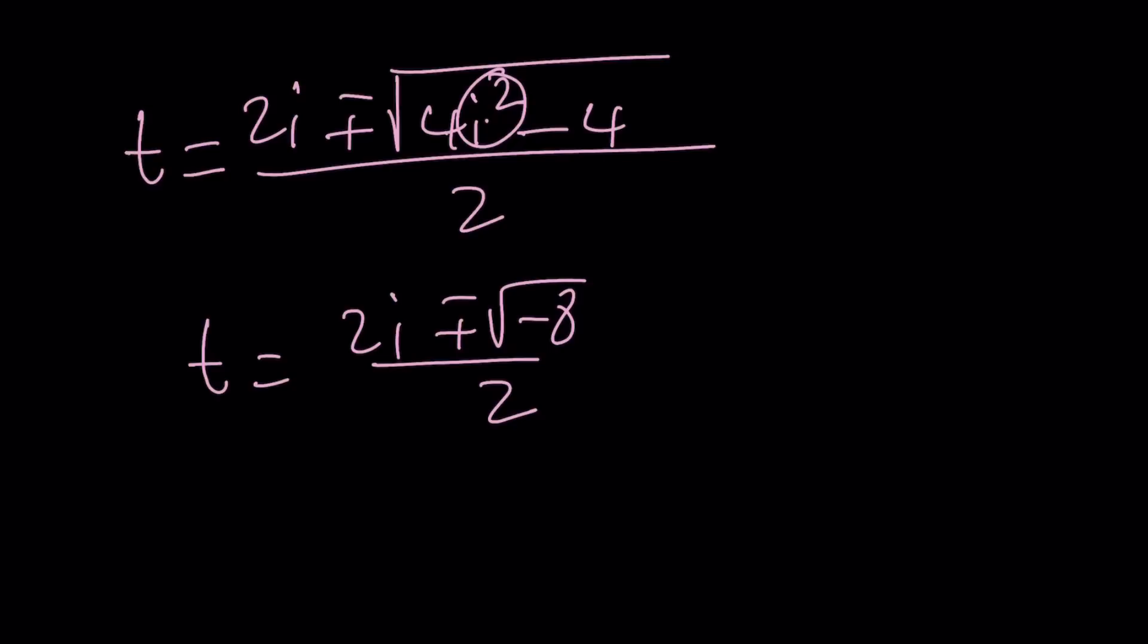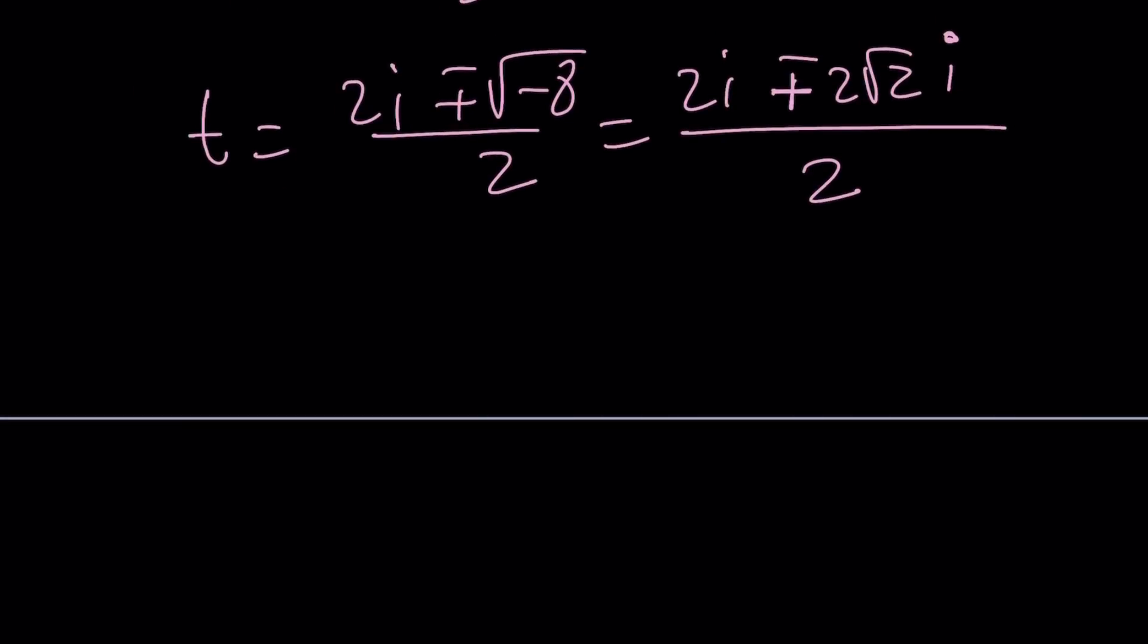But square root of negative 8 can be written as 2 root 2i because the square root of 8 is 2 root 2. And notice that we have i as a common factor and everything is divided by 2. So this gives us the following: 1 plus minus root 2 times i. And that is the t value, or the t values, I should say, because there is two of them. Right? Okay. So this is the quadratic formula. What's the other method?